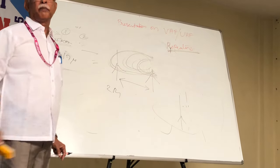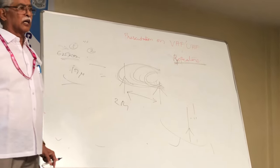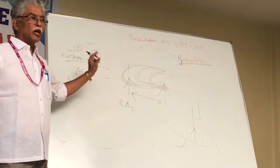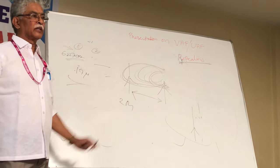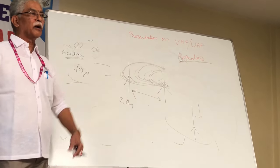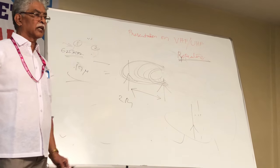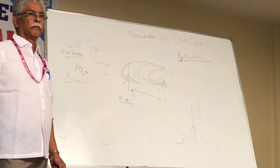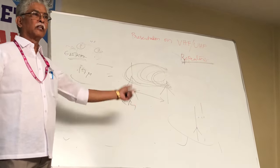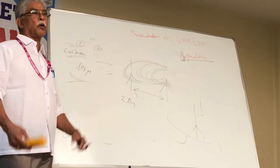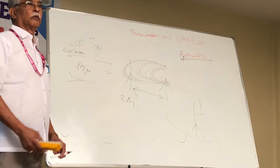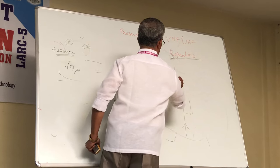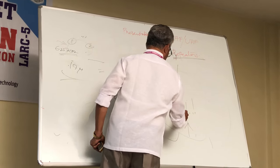Those who have been operating repeaters must already have experience of this problem — losing weak signals when there is transmitting occurring simultaneously. This is a general problem everywhere. Vertical separation is the best thing possible.